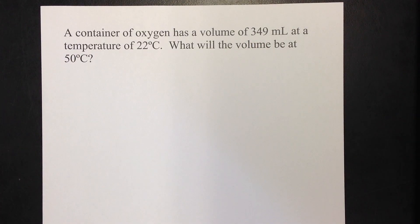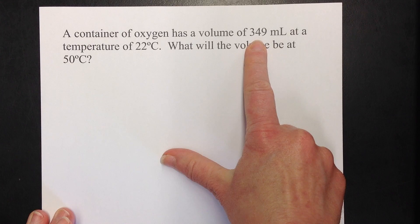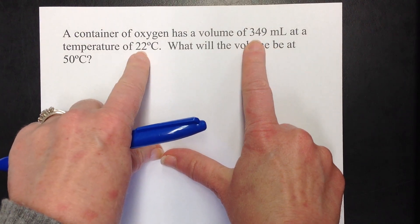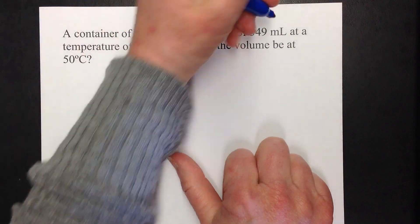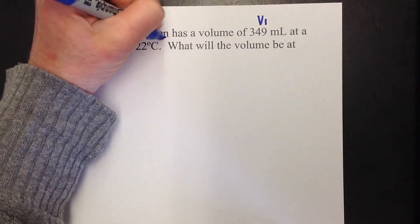So, let's go through and mark everything in the problem first. First, I have oxygen at 349 milliliters at 22 Celsius. These go together. That at's kind of like a little clue for me there. So, that's my volume one and my temperature one.